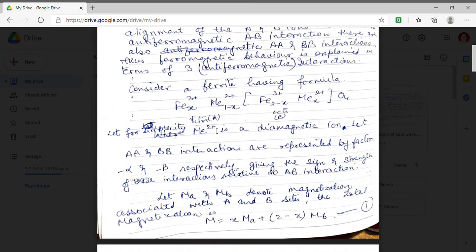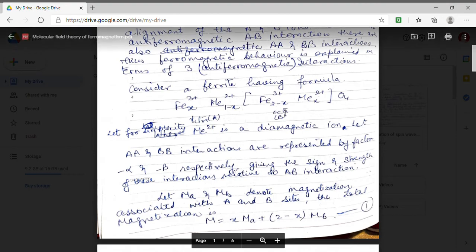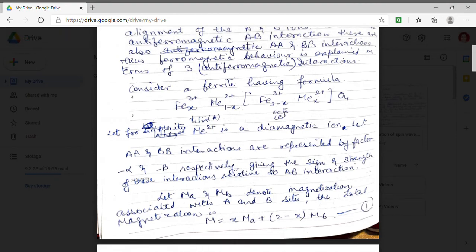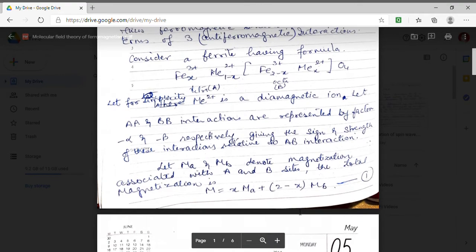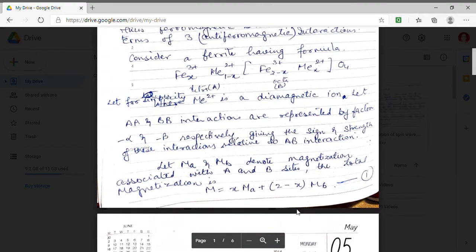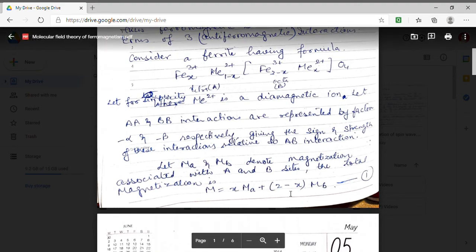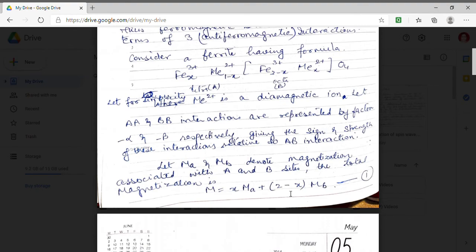Which will be at A site the concentration of trivalent metallic iron that is iron is X. So magnetization component will be XMA and at octa site that is B site concentration is 2-X. So magnetization will be 2-X MB. This expression gives the total magnetization of my material.